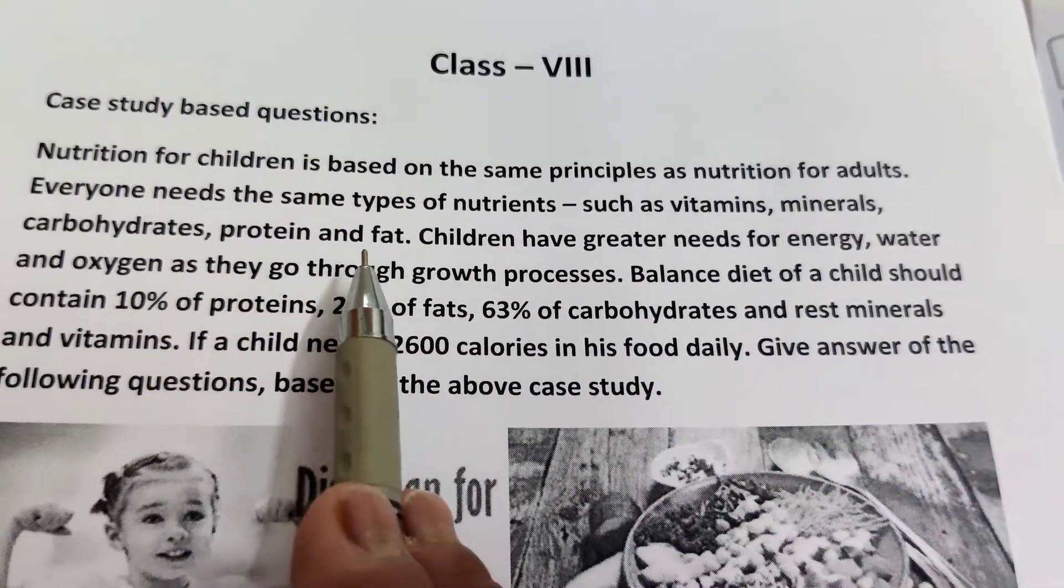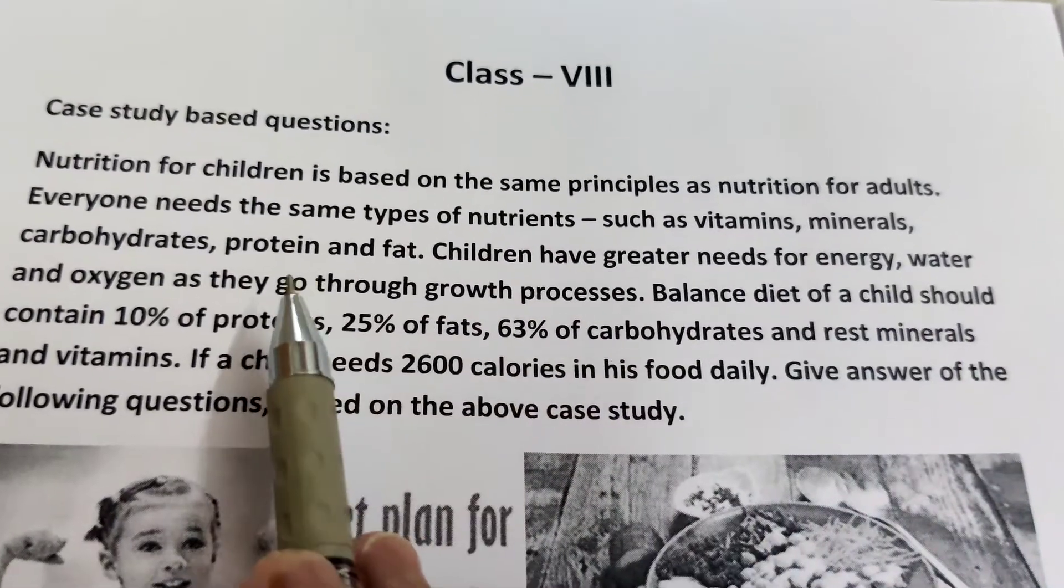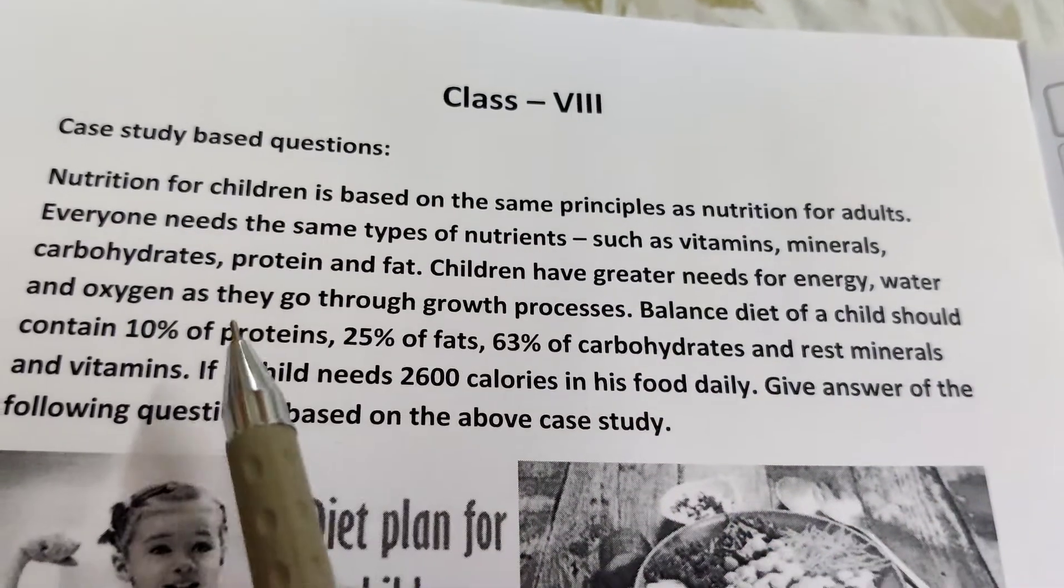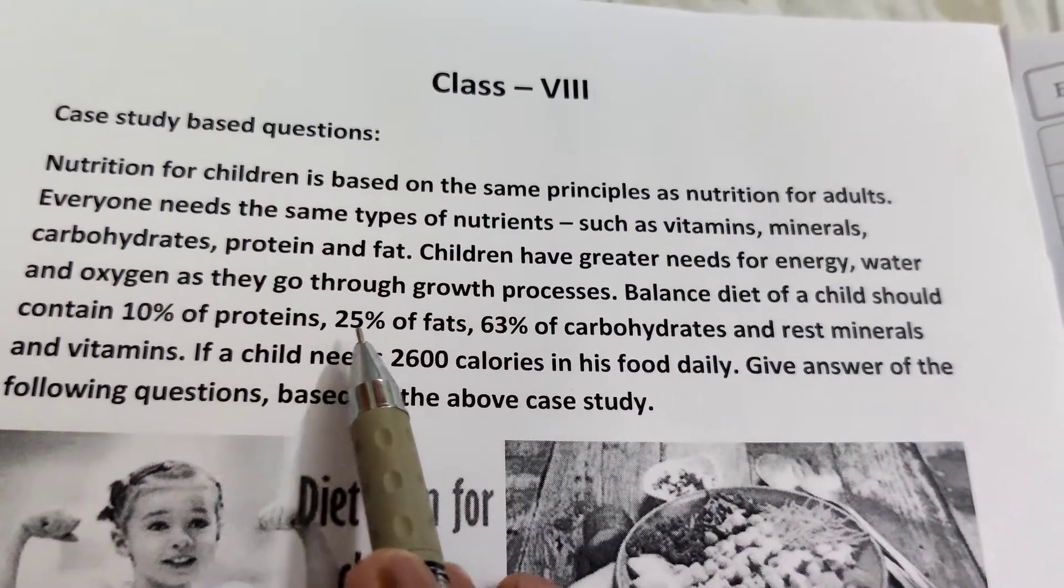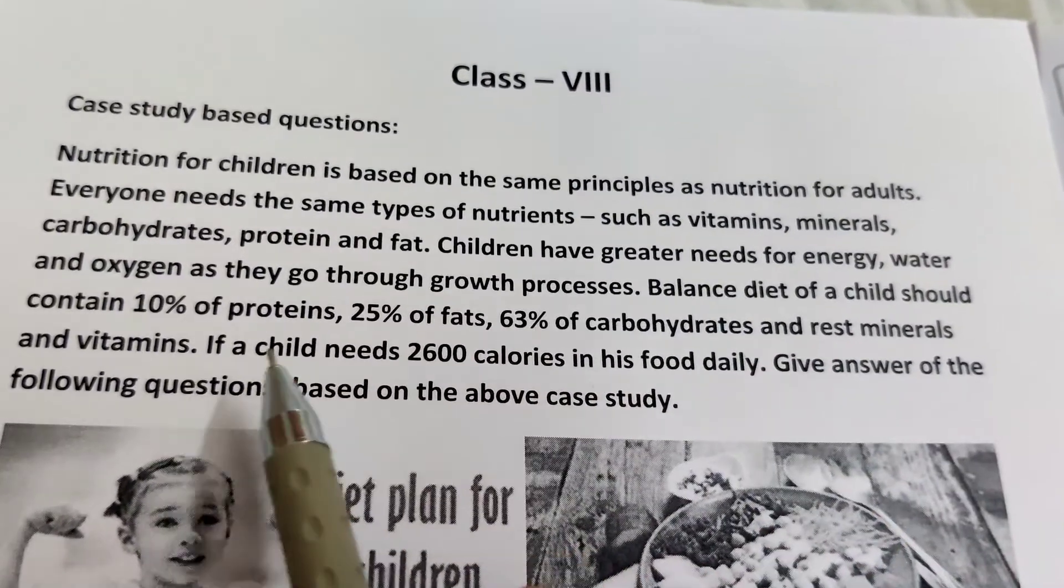Children have greater needs for energy, water and oxygen as they go through growth processes. The balanced diet of a child should contain 10% of proteins, 25% of fats, 63% of carbohydrates and rest minerals and vitamins.